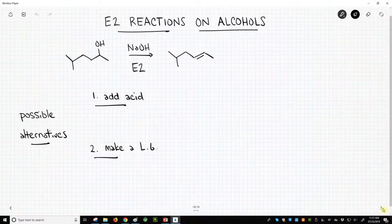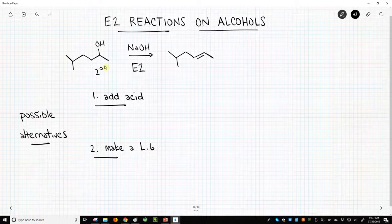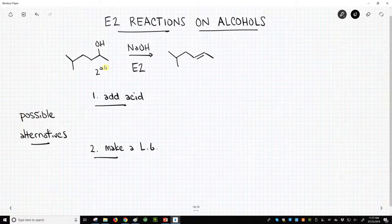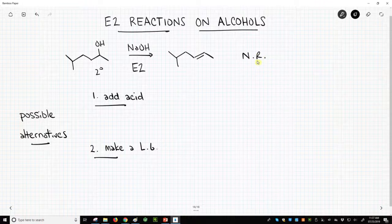So at the top of the screen, I have an alcohol. This is a secondary alcohol, and we treat it with a nice strong base. That's the cue for a very likely E2 reaction, and I've even drawn an E2 product, the alkene. But the fact is, this will be a no reaction. Nothing will happen. We will not get an E2 reaction.